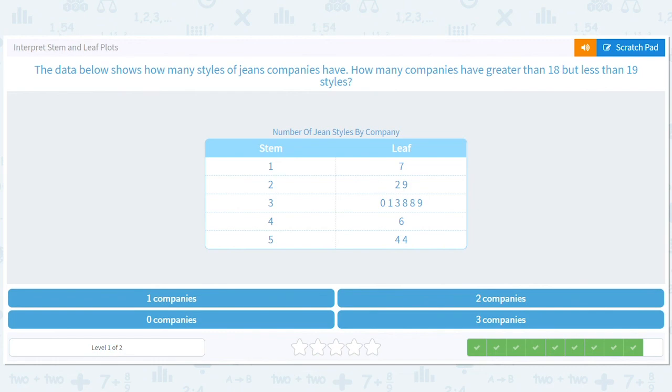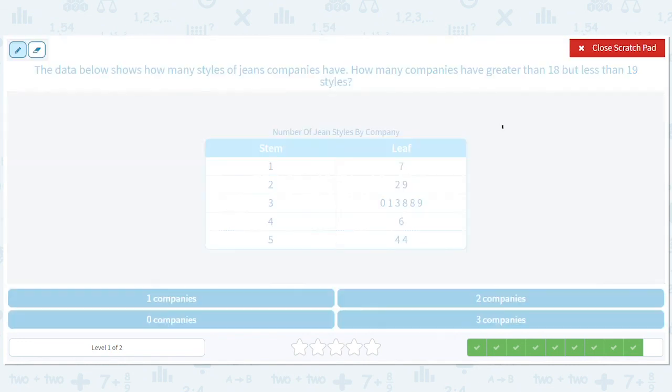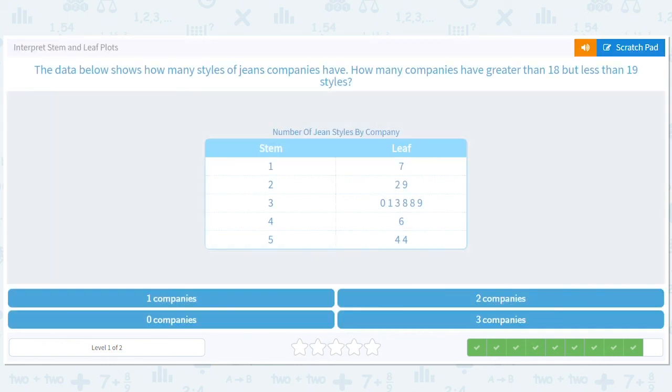The data below show how many styles of jeans companies have. How many companies have greater than 18 but less than 19 styles? Greater than 18 but less than 19, I mean you don't even have to look at this histogram to know that the answer there is zero, right? You can't be greater than 18 and less than 19, because the numbers that are greater than 18 are 19, 20, and the numbers that are less than 19 are 18. So nothing is in both those categories. But you can also see from the histogram that there's nothing even close to 18 or 19 here, so either way it's zero companies.